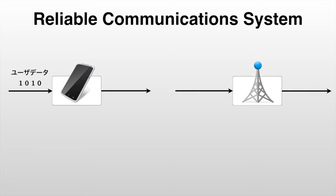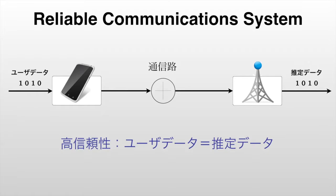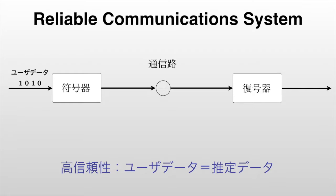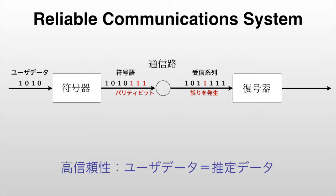I'd like to show you a model of a communications system so you can get an understanding of the type of research problems that we work on. Suppose we have a user that wants to transmit some data to a base station, but it must be transmitted over a noisy channel. If the data estimated by the base station is the same as the data that the user transmitted, we say that we have reliable communications. The user's encoder adds some extra bits called parity to form a codeword, and even if a few errors occur in the received sequence, the decoder should be able to recover the original data.